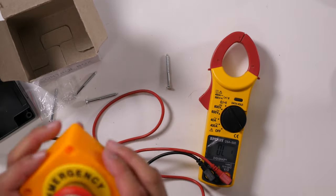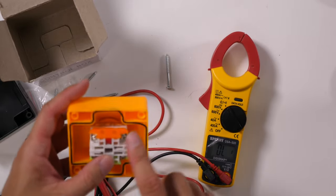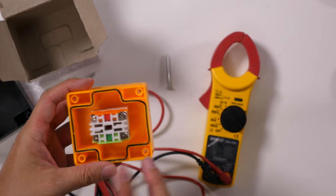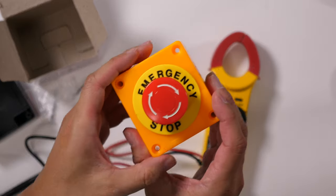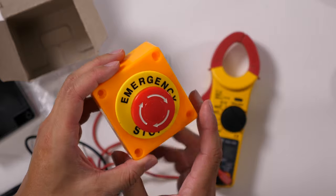That is the emergency stop. Again, orange is normally closed, green is normally open.